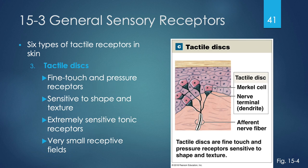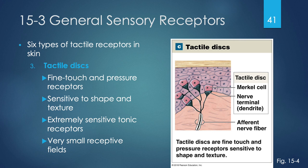Tactile discs look like free nerve endings — a single afferent nerve fiber with several branches — but instead of thread-like extensions, they have blunted broad discs at the ends. They sense fine touch and pressure and are sensitive to shape and texture. The broad base of the tactile disc can sense stimuli pressing from many different directions. Because of this broad end, they are extremely sensitive tonic receptors with very small receptive fields.